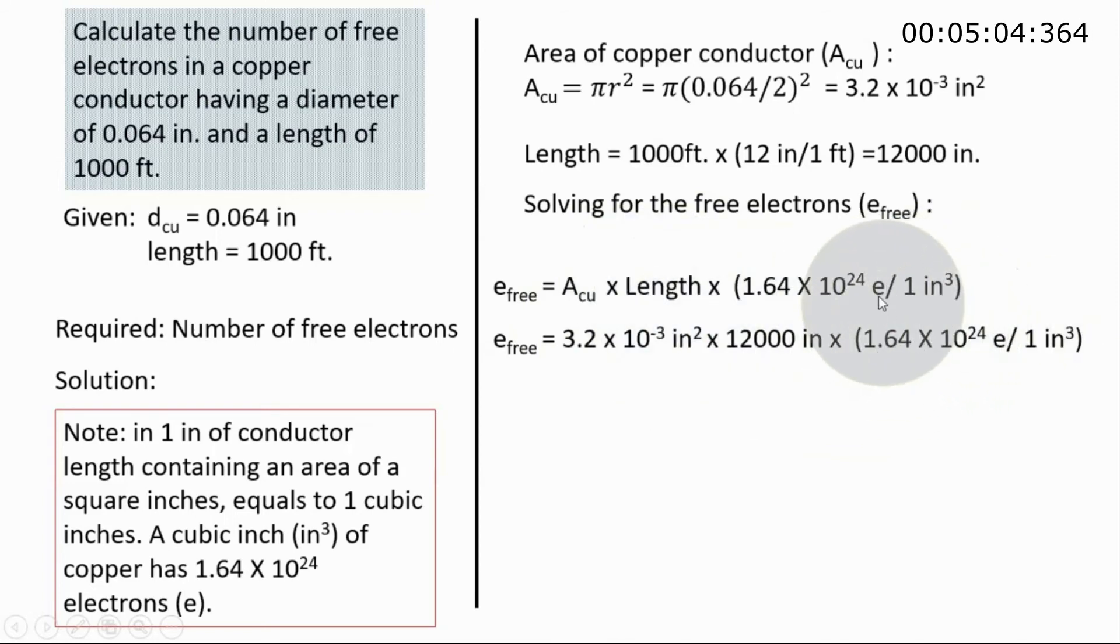So we substitute now the value for the area, which is 3.2 times 10 to the negative 3 square inches, times the 12,000 inches which is converted from 1000 feet. You multiply that to 1.64 times 10 to the 24 electrons over one cubic inch. Now if you get your calculator and just push it...